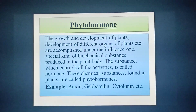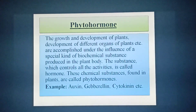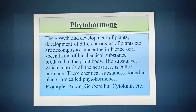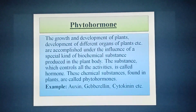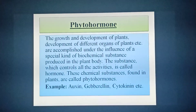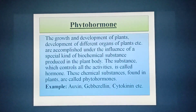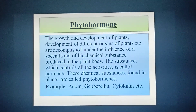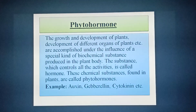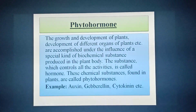What this means? The germination of the plant, growth of the plant, flowering of the plant, fruit formation of the plant, etc. — this total event of the plant body is controlled by some chemical components. And the name of these chemical components is the hormone.